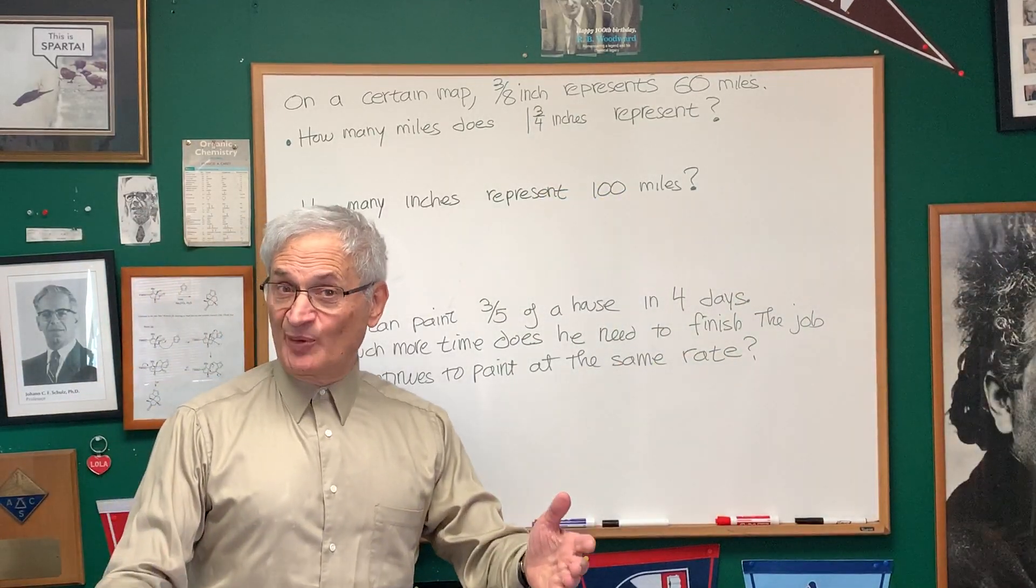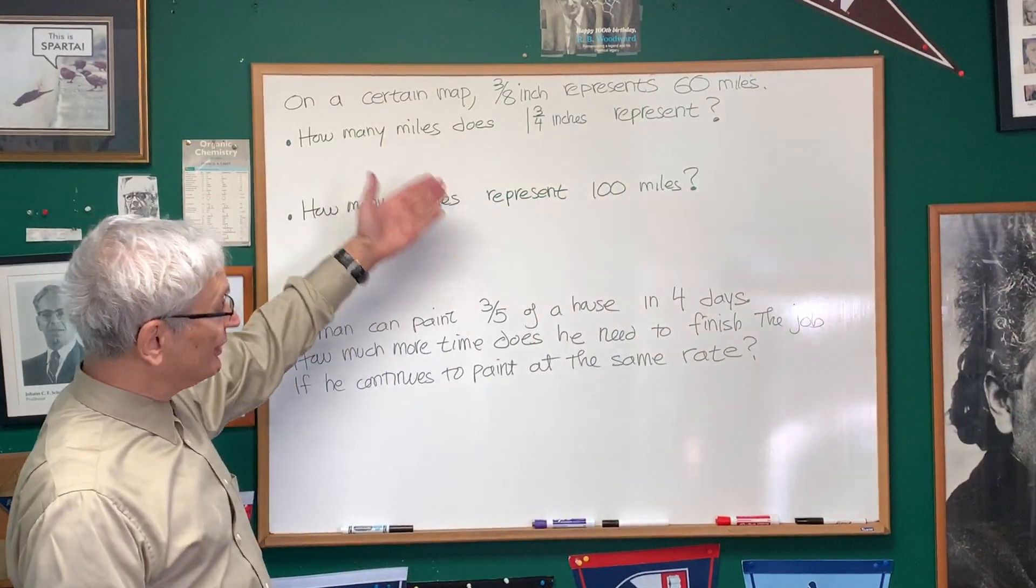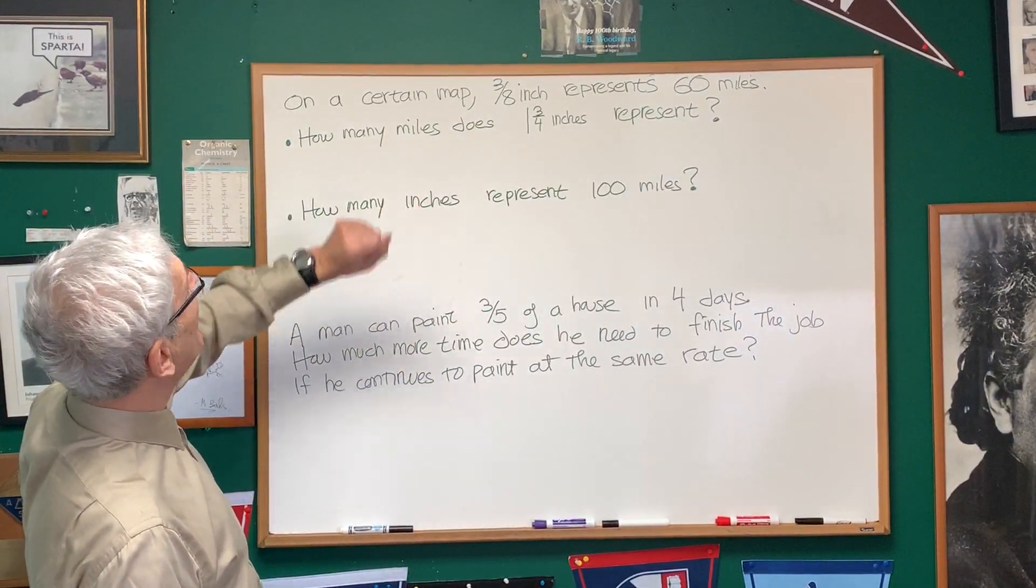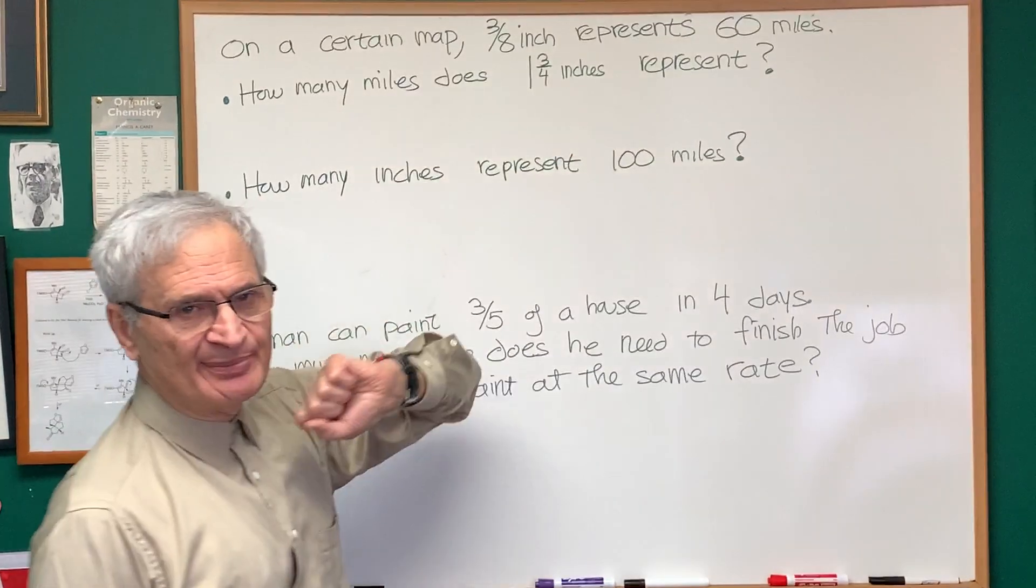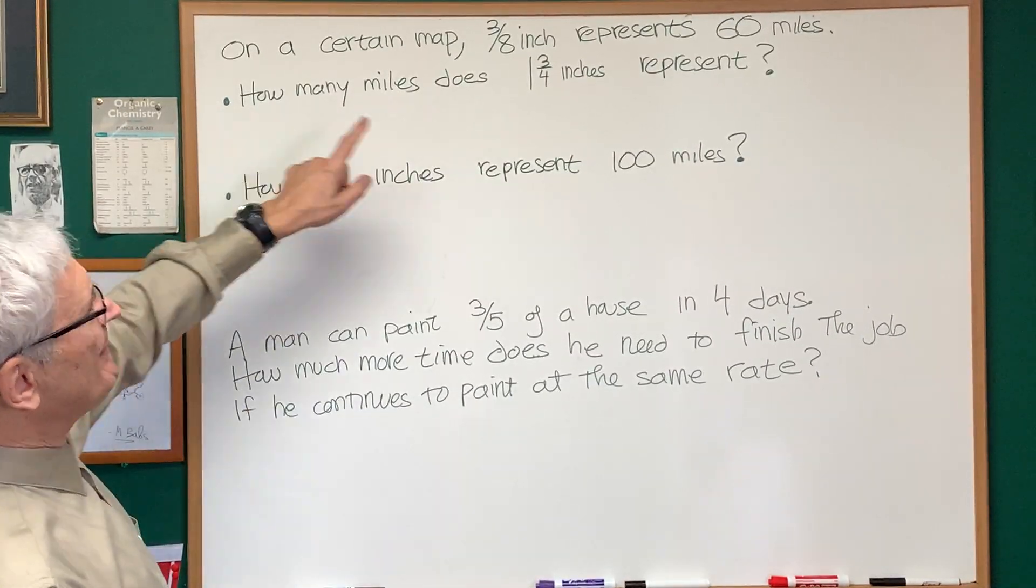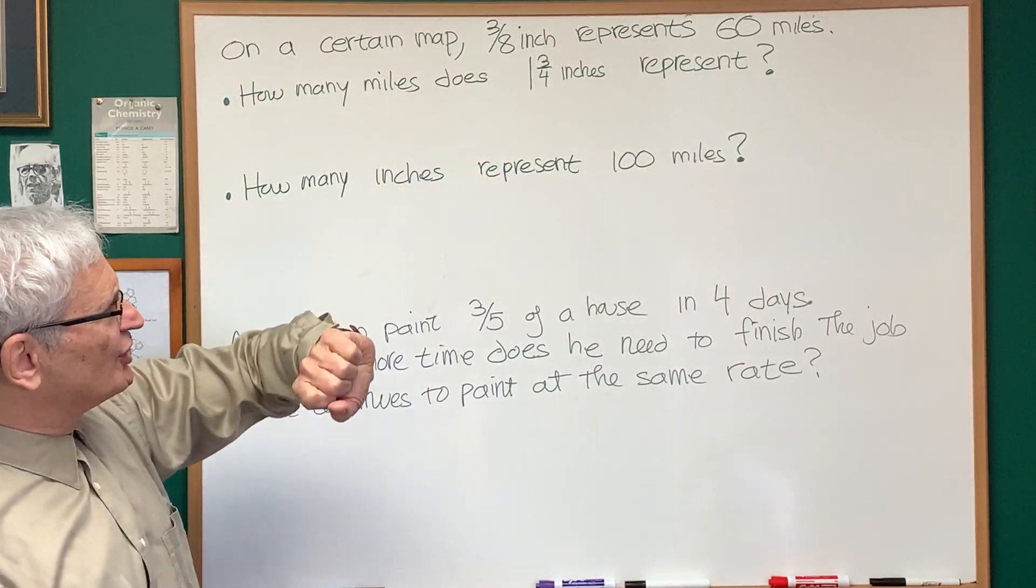Okay, these are ratio and proportion problems, and I'm going to do three of them. Let's look at this first one. On a certain map, three-eighths of an inch represents 60 miles. Question: how many miles does one and three-quarter inch represent?